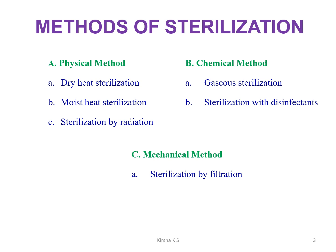The methods of sterilization include physical methods — dry heat sterilization, moist heat sterilization, and sterilization using radiations — chemical methods such as gaseous sterilization and sterilization with disinfectants, and mechanical methods including sterilization using filtration.